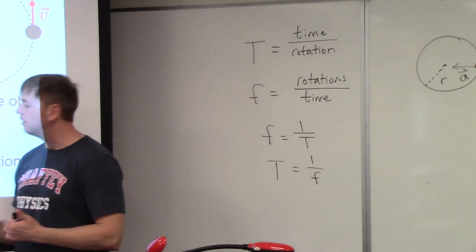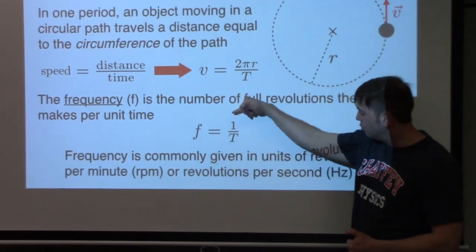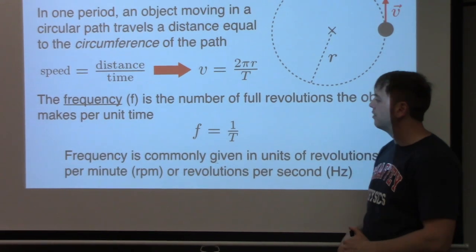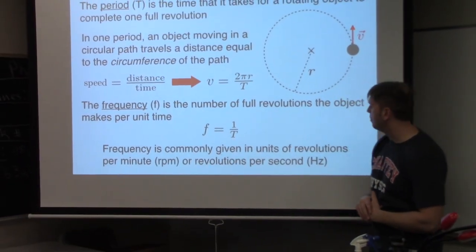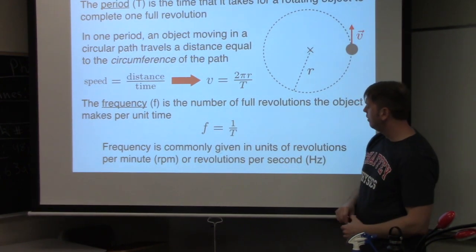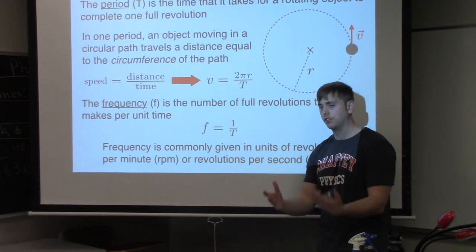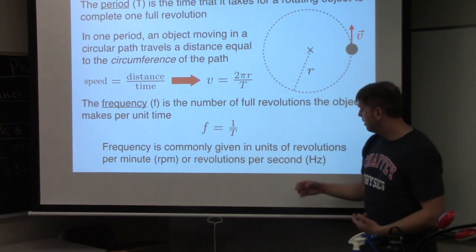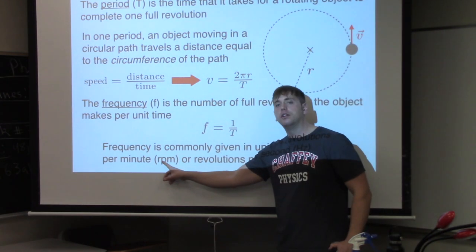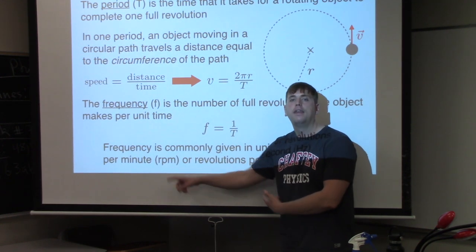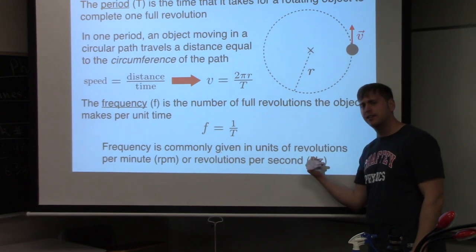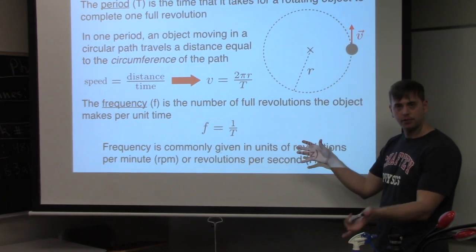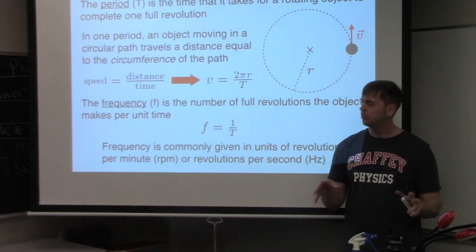For frequency units: revolutions per minute is commonly written as RPM. Revolutions per second is called Hertz (Hz) — so 1 Hz = 1 revolution per second. These are the two most common units for frequency that we'll use. We're going to go through some examples to clarify these ideas.